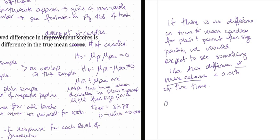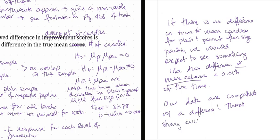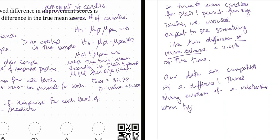That's pretty unusual. Our data are compatible with a difference in means — there is strong evidence of a relationship between type of candy and the amount of candy you get, at least as it pertains to plain versus peanut M&Ms. We haven't compared all possible types of candies such as Skittles or other types of M&Ms, but this is a good solid first start.